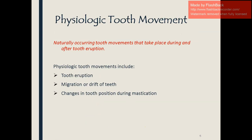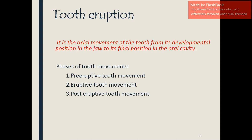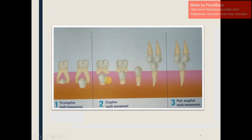There are two types of tooth movement: physiologic tooth movement and orthodontic tooth movement. Physiologic tooth movements are natural, occurring during and after tooth eruption, and include tooth eruption, migration or drift of teeth, and changes in tooth position during mastication. There are three phases of tooth eruption: pre-eruptive, eruptive, and post-eruptive. Pre-eruptive tooth movement is when the deciduous tooth is already erupted and the permanent tooth moves from its developmental position toward an axial position before complete eruption.